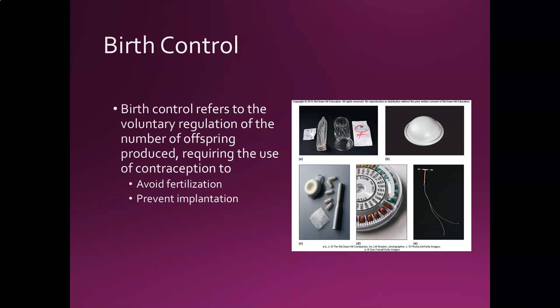Birth control refers to the voluntary regulation of the number of offspring produced — allowing you to choose how many children to have and when. Contraception falls into two big categories: one, avoid fertilization; and two, prevent implantation. Things that avoid fertilization keep sperm and egg from meeting.